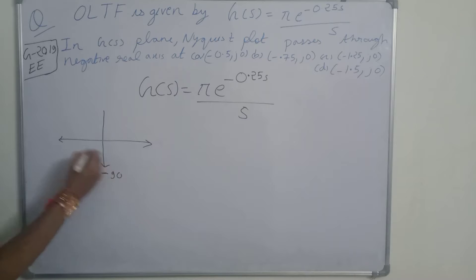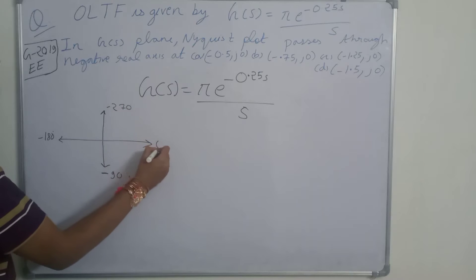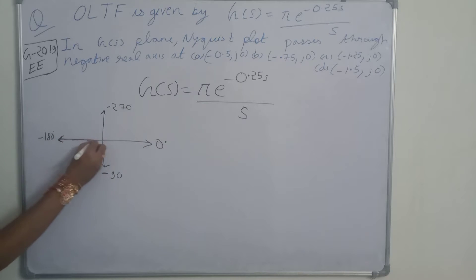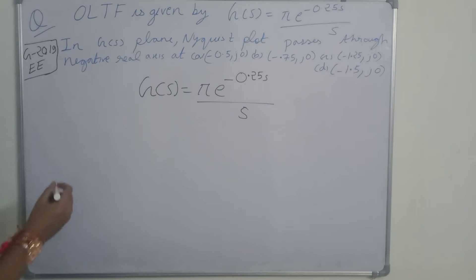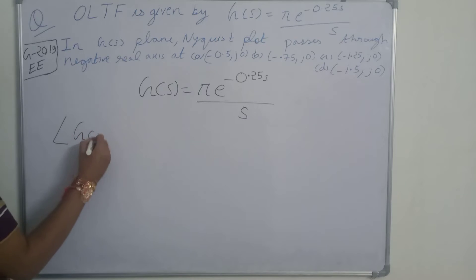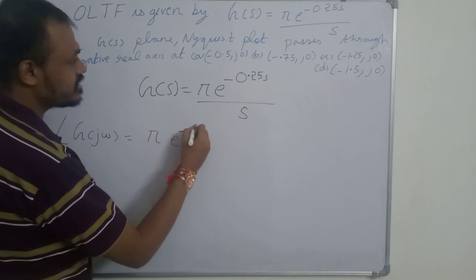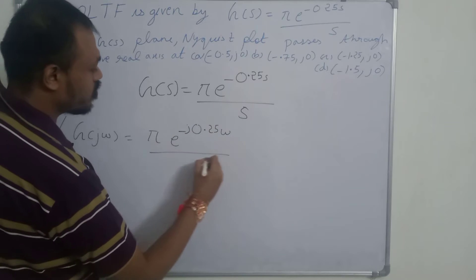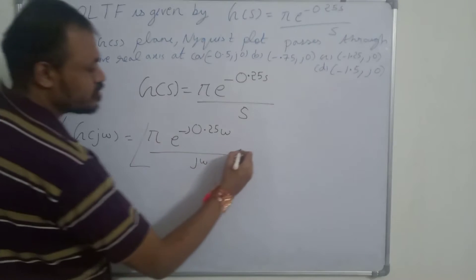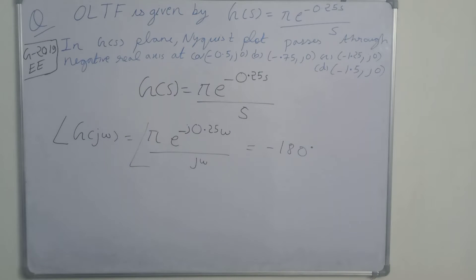Here the angle is −90°, here the angle is −180°, here the angle is −270°, and here the angle is −360° or 0°. At the negative real axis, the angle is −180°. So we have to equate the angle of G(jω) to −180°. Substituting s = jω, we get G(jω) = π·e^(−j0.25ω) / (jω), and its angle should equal −180°.